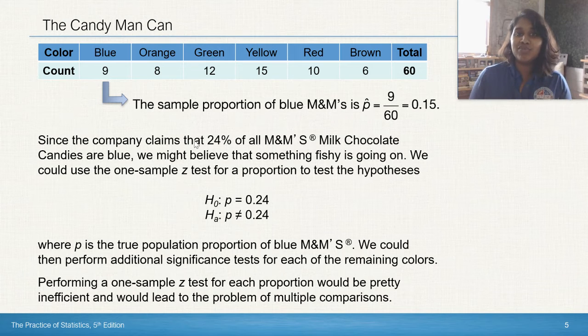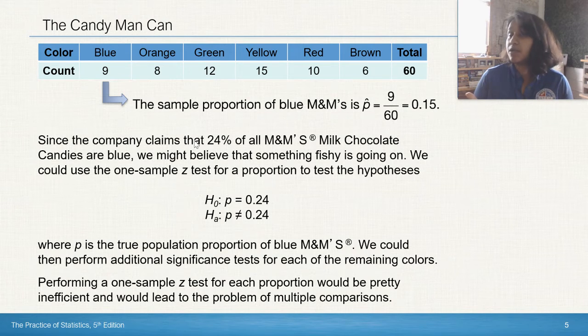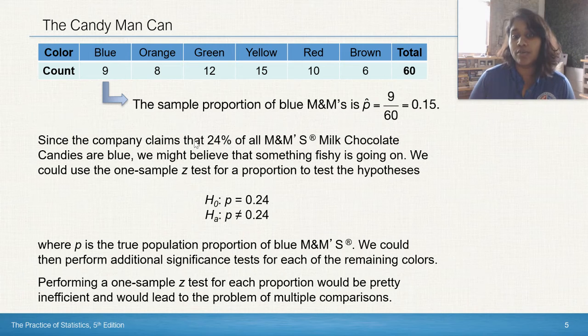Then that seems pretty inefficient. You've got to do a Z test for each and every single category. And what if you've got more than just six categories in a future experiment? That just seems like a lot of work, and it just seems chaotic to deal with so many different comparisons.